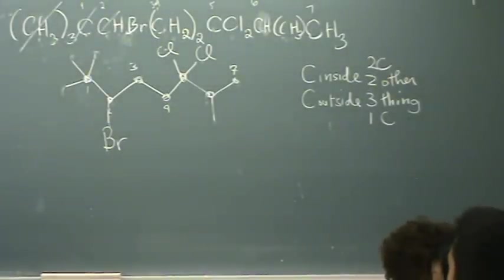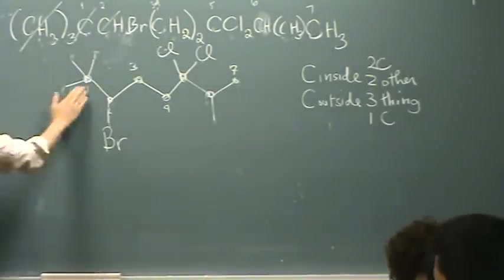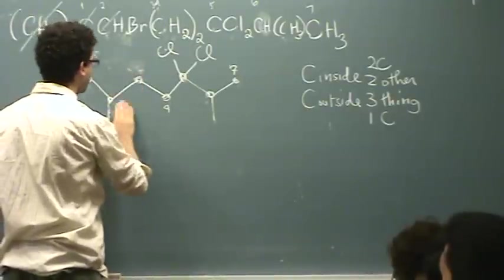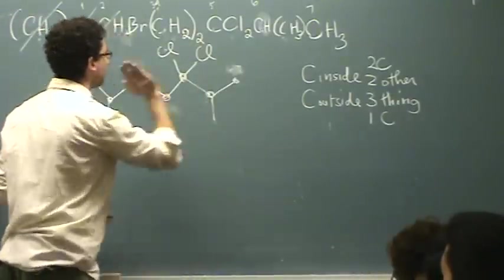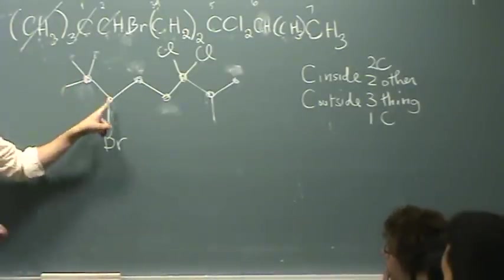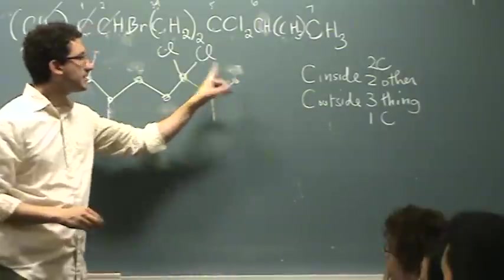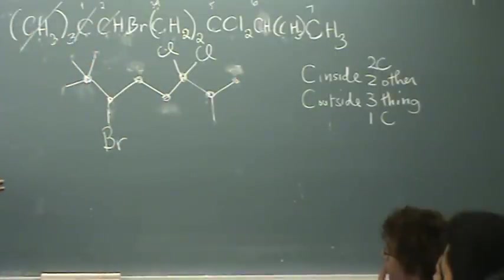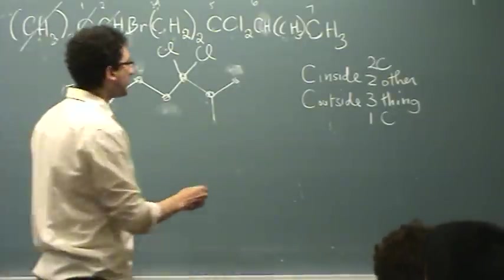Name this now. What's the longest chain? It's not necessarily seven. One, two, three, four, five, six, seven, eight. Yes, and that includes all my halogens. Remember your longest chain, when there's a halogen, has to include all halogens. So, it's eight, it's octane.